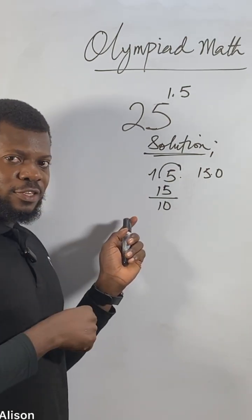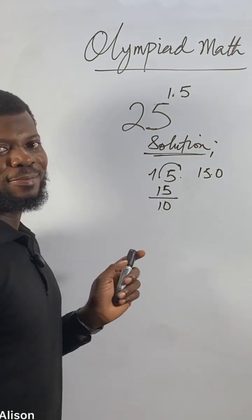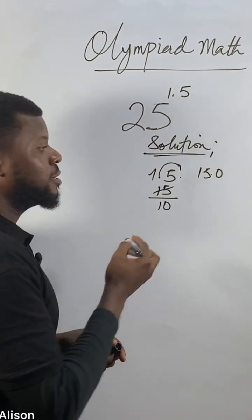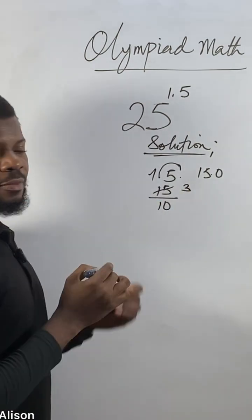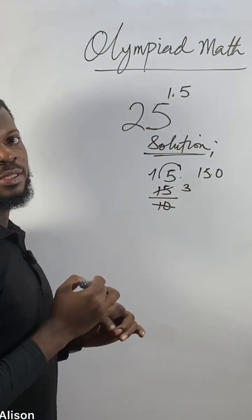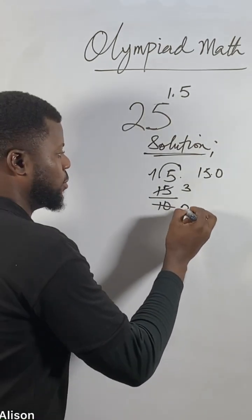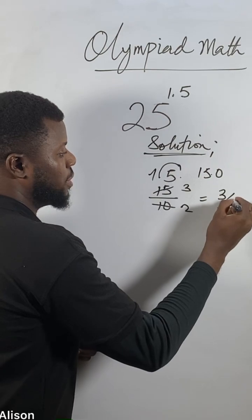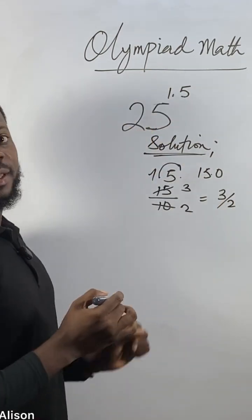The answer is 5. So 5 goes into 15 how many times? Three times - 5, 10, 15. And 5 goes into 10 how many times? Two times - 5, 10. That means 15 over 10 reduces to 3 over 2. This 3 over 2 equals 1.5.